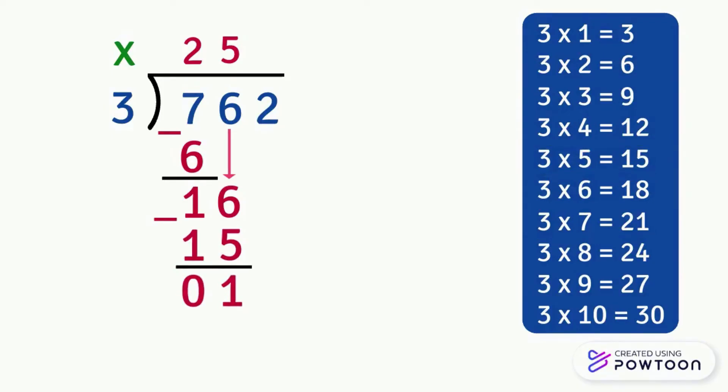Now what only remains is to bring down the ones digit which is 2 and put it next to 1. It will be 12 and we have to divide 12 by 3. So we ask the question 3 times what equals 12? It's 3 times 4 equals 12. Then we write 4 above the 2 in the quotient and we multiply 4 by 3. 4 times 3 equals 12, we write 12 here below the 12 and subtract 12 minus 12 equals 0.